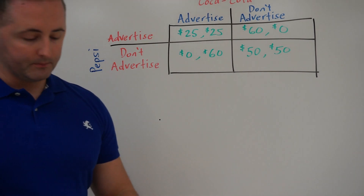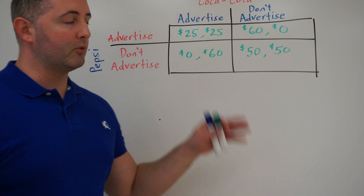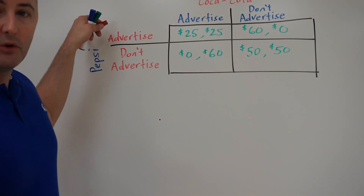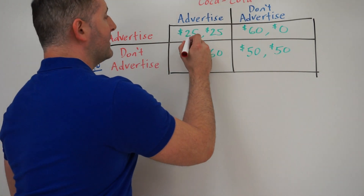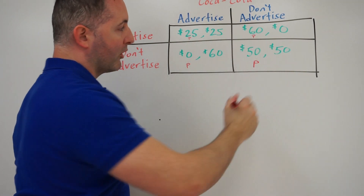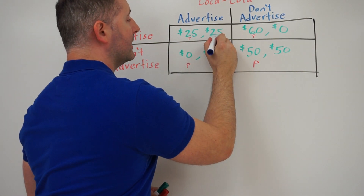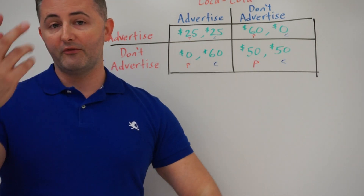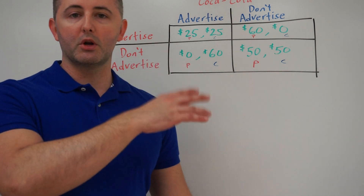Let's look at the payoff matrix. Pepsi is on the horizontal axis and is represented by the first number in each cell. Their options yield $25, $60, $0, or $50. Coke is on the vertical axis and is represented by the second number. I'll label Pepsi's numbers with a little 'p' and Coke's with a little 'c' to keep them clear.